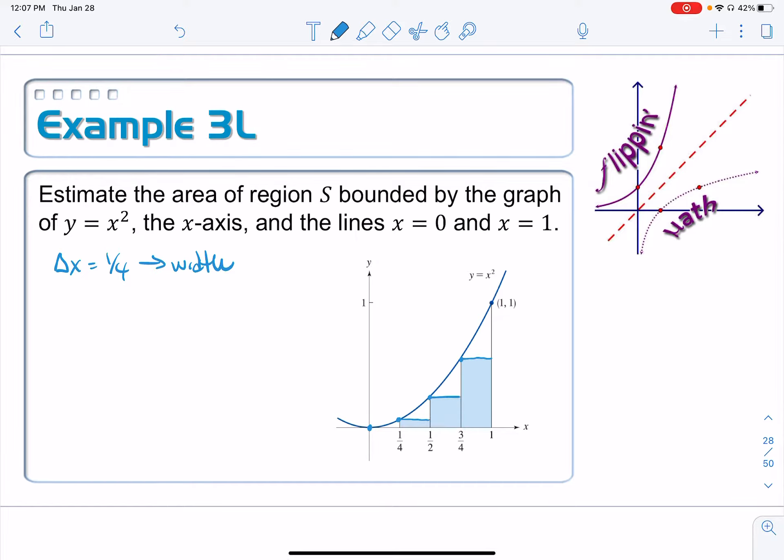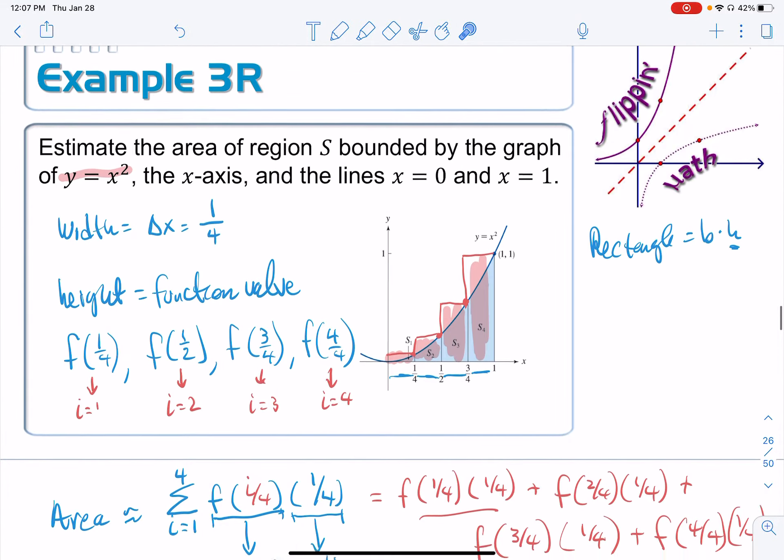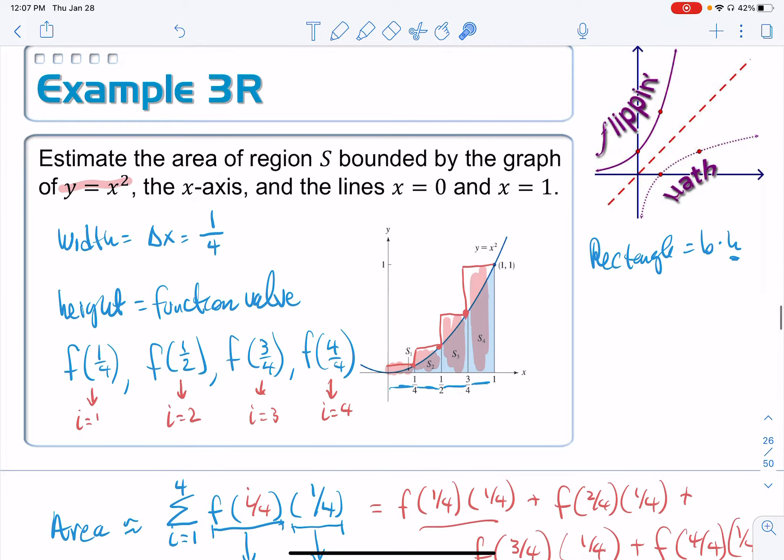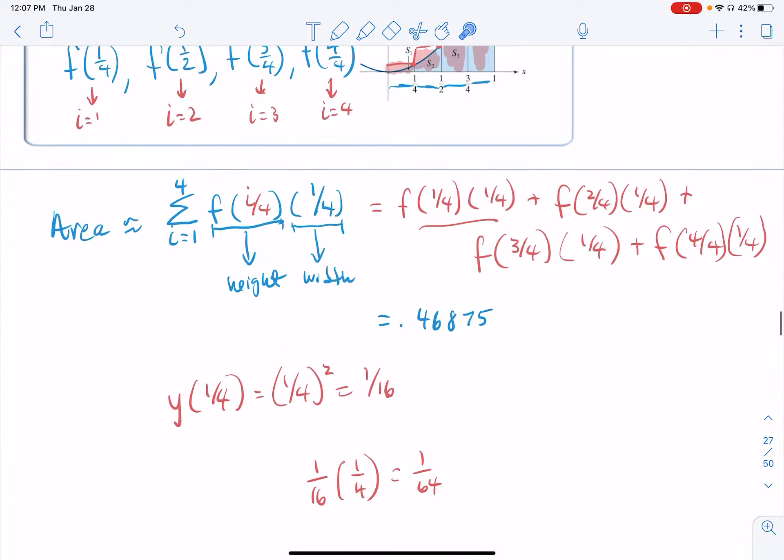So this one on this left Riemann sum, using the left endpoints, notice a couple of things. First of all, all your rectangles are underneath the curve because this thing is increasing, so we're going to be under-approximating it. Also notice that we start with the first endpoint, but we leave off the last right endpoint. Let's compare that to the right Riemann sum. So on the right Riemann sum, we left off the first left endpoint, but we got to keep the last right endpoint. That will always be the case with these right Riemann sums versus the left Riemann sum.